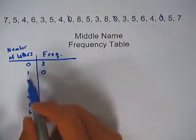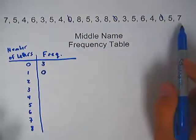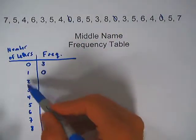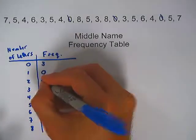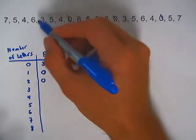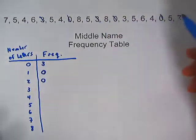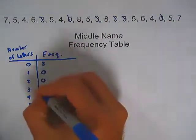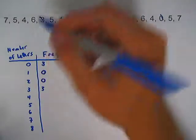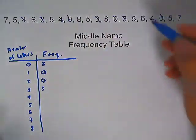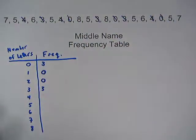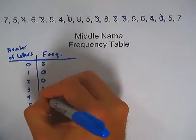If I look for 2, generally there aren't many names that have either 1 or 2 letters in them. So this one was also 0. Now 3. So we had 1, 2, 3 people with a middle name of 3 letters. 4. We have 1, 2, 3 again. So that's also 3.